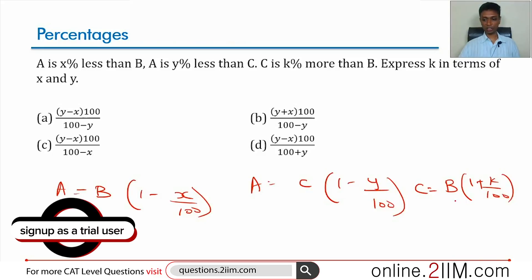We got A in terms of B and C, and C in terms of B. So we substitute this into this, we should be through.